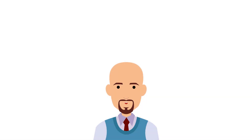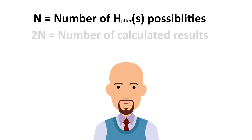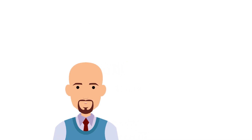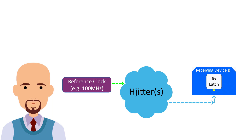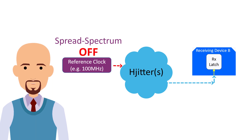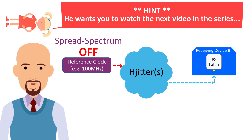We should note here that if there are a certain number of possible jitter transfer functions for a given PCIe version, then there are twice as many calculated maximum RMS jitter results. This is because the jitter transfer function must be applied to a reference clock with spread spectrum on, as well as to a reference clock with spread spectrum off. I will be explaining spread spectrum clocks in the next video of this series.